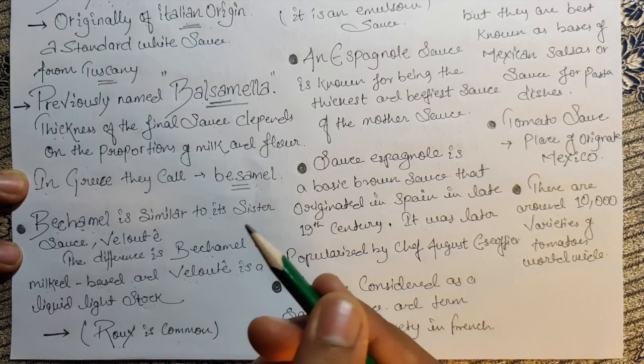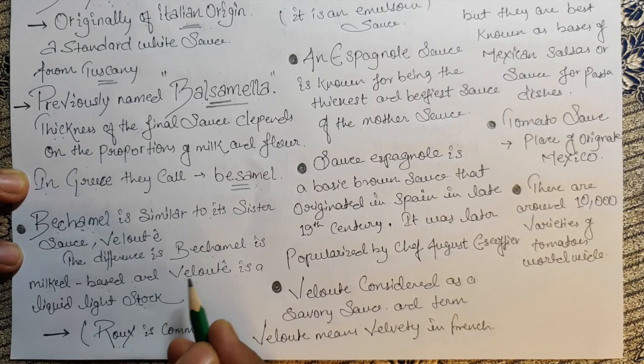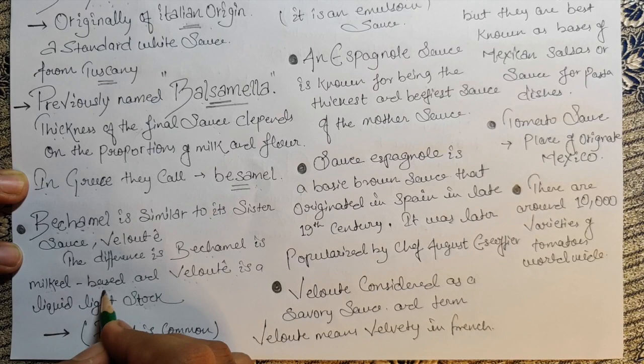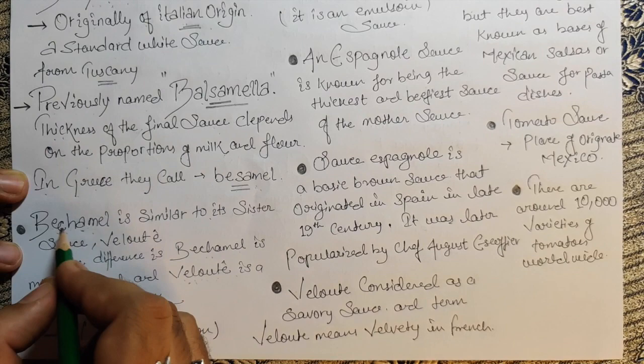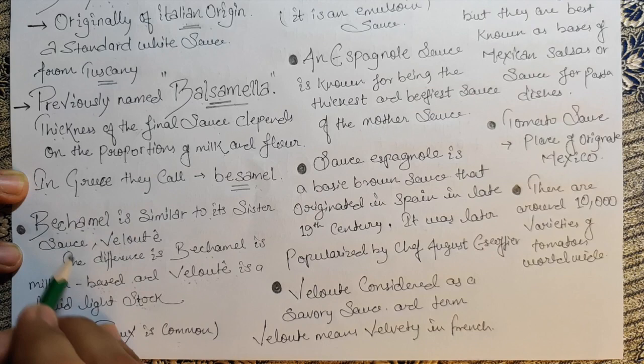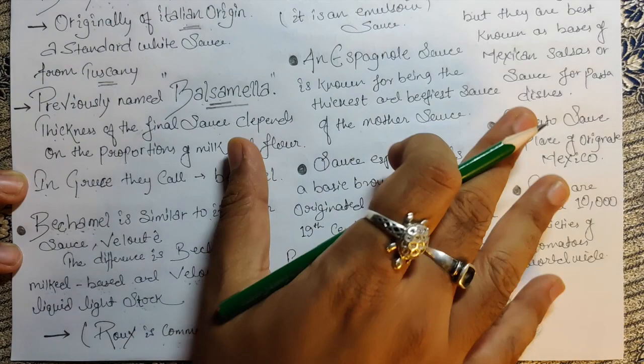The only difference between béchamel and velouté is: velouté uses stock, béchamel uses milk. The common ingredient is roux. There are three types of velouté: chicken velouté, meat velouté, and fish velouté. Choose your stock, add the roux, and your velouté is ready. When it comes to béchamel, add roux and milk — done.